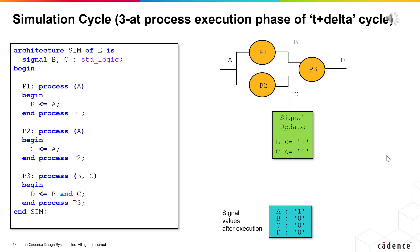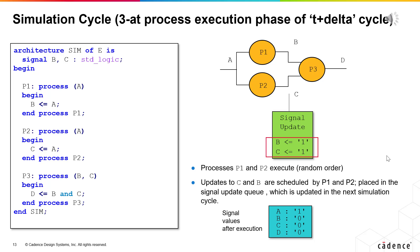Since all signals in the signal update queue are updated, we move to the second phase of the first delta cycle, which is the process execution phase. Processes P1 and P2 in the process execution queue are executed in random order. We cannot predict the order of execution of the processes, but this should not matter. Process P1 assigns the value 1 to B — this is a new value for B, so the assignment is placed on the signal update list. Process P2 assigns the value 1 to C — this is a new value for C, so the assignment is placed on the signal update list. No more processes remain to be executed, so simulation moves on to the signal update phase of the next delta cycle.